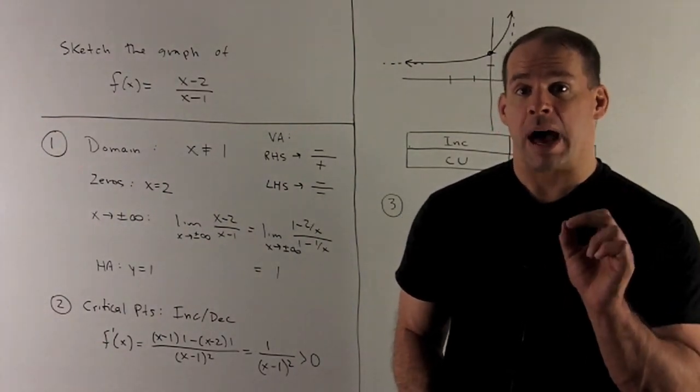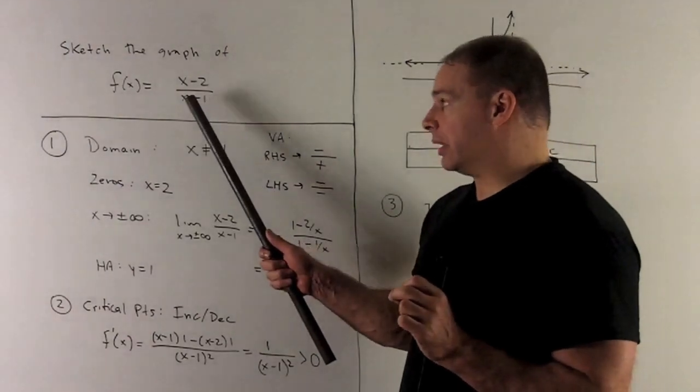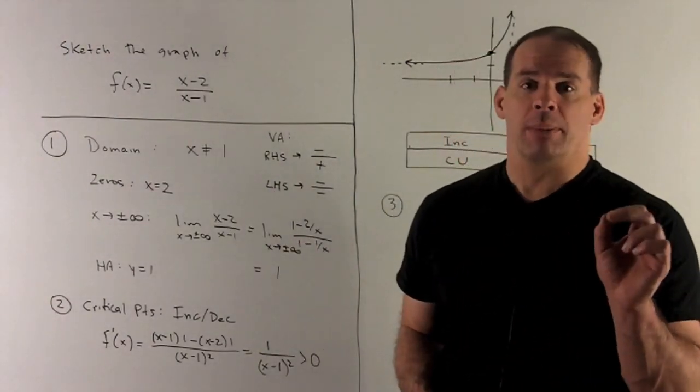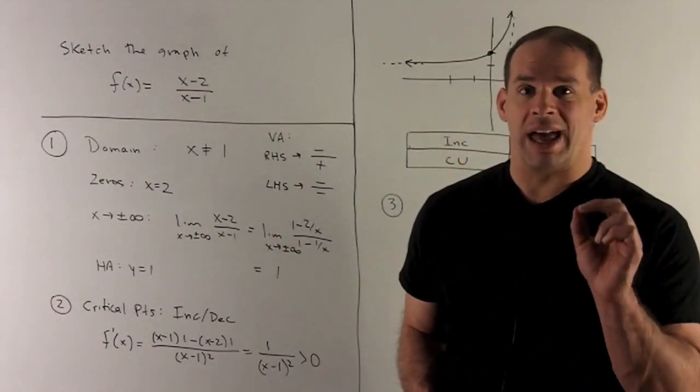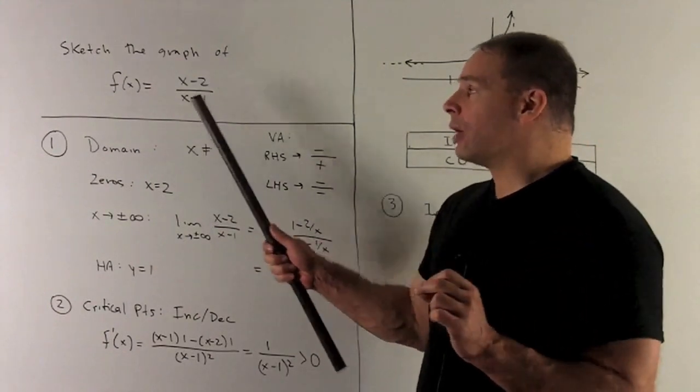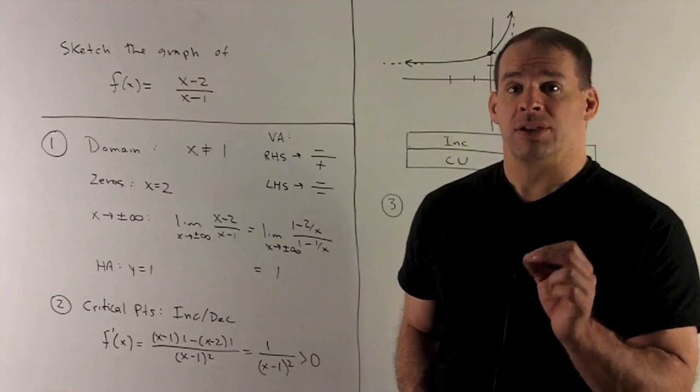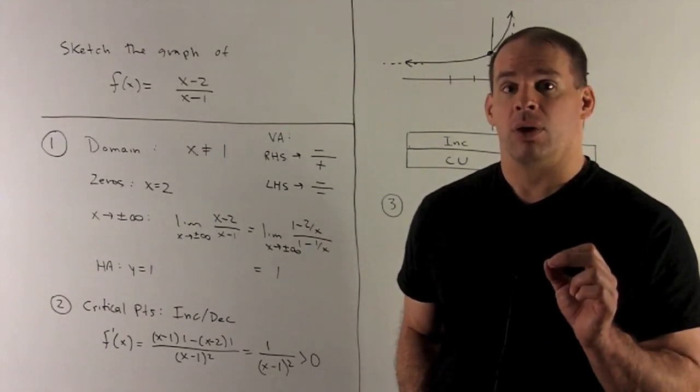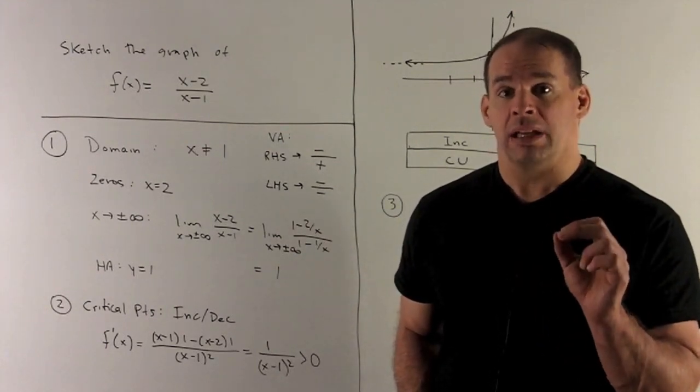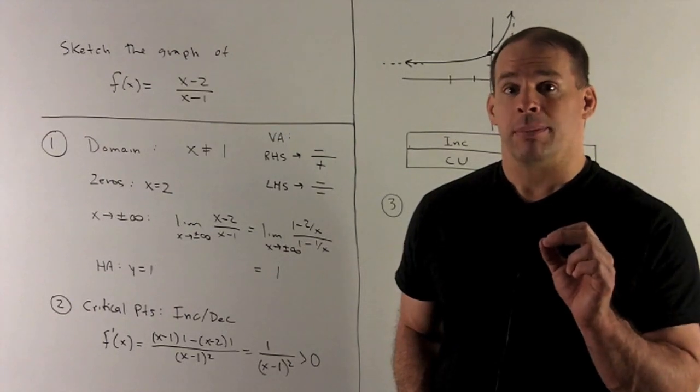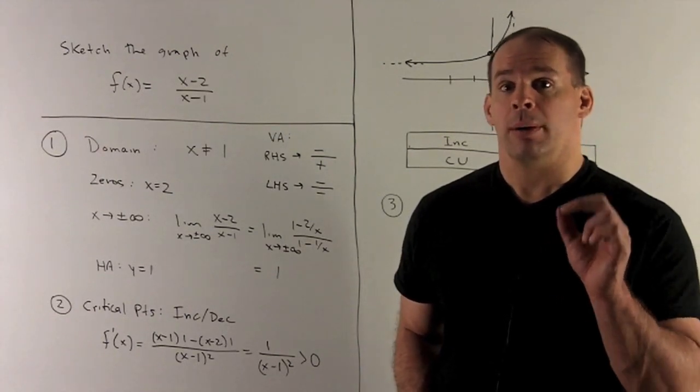In the denominator, what's going to happen? I'm on the left side. Well, consider a point like 0.9. If I put that in there, we're going to have a negative number also. So if I come in from the left, it's going to be negative over negative or positive, meaning coming in from the left, my vertical asymptote goes to plus infinity.